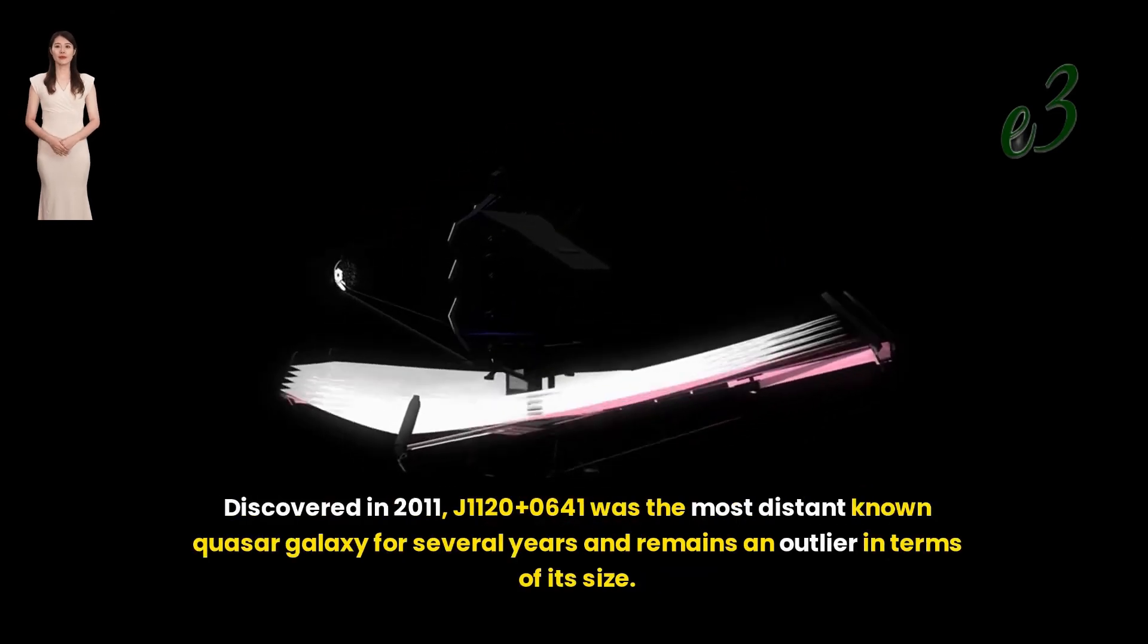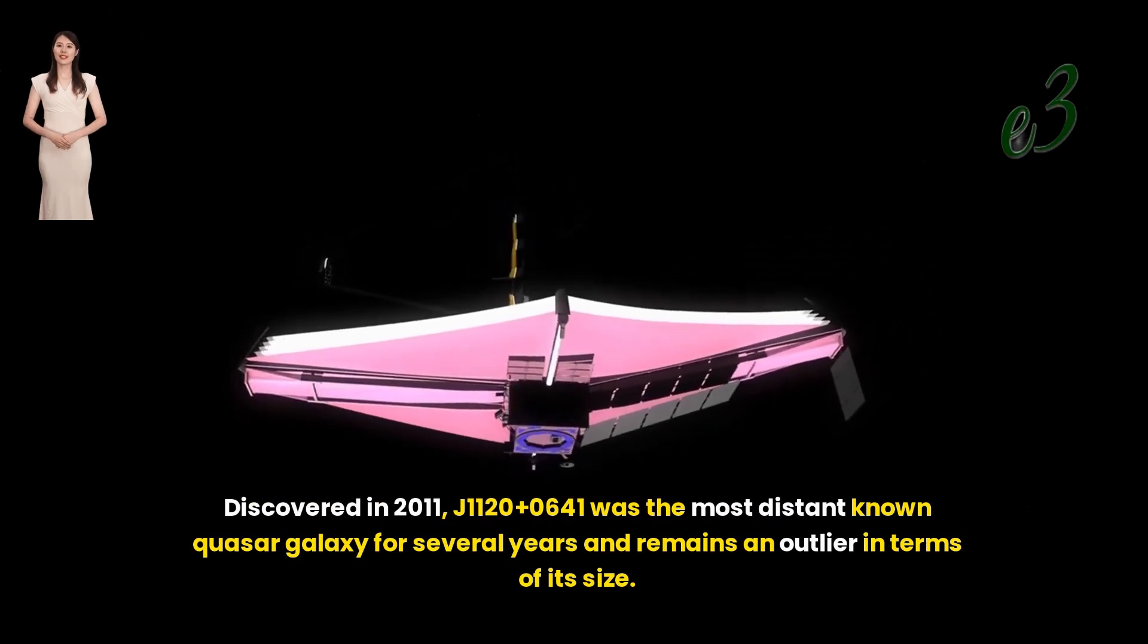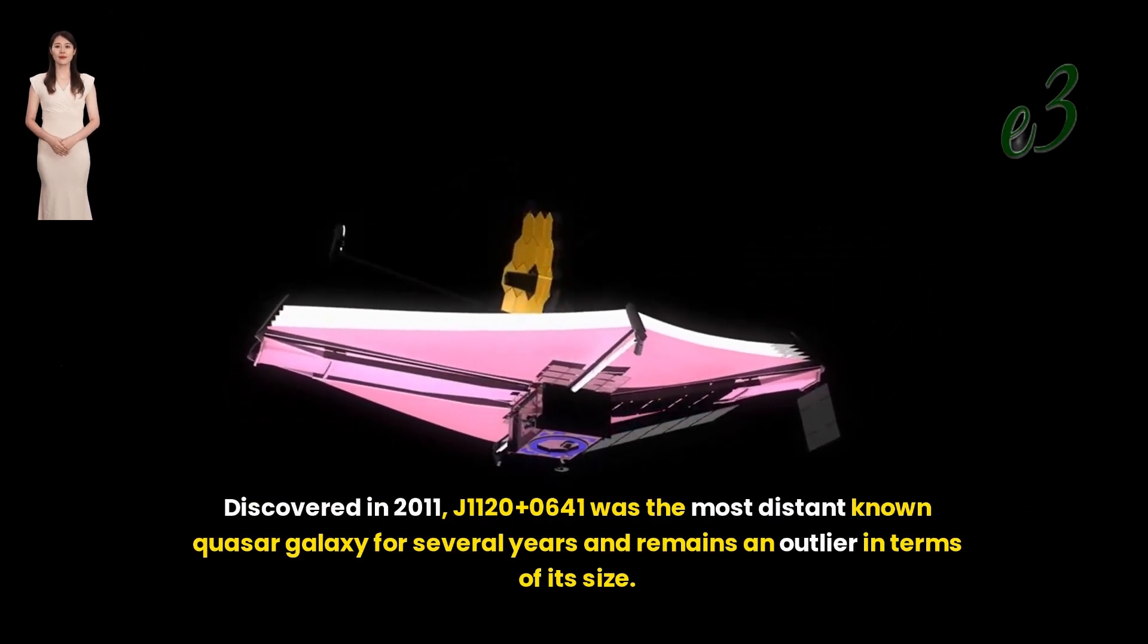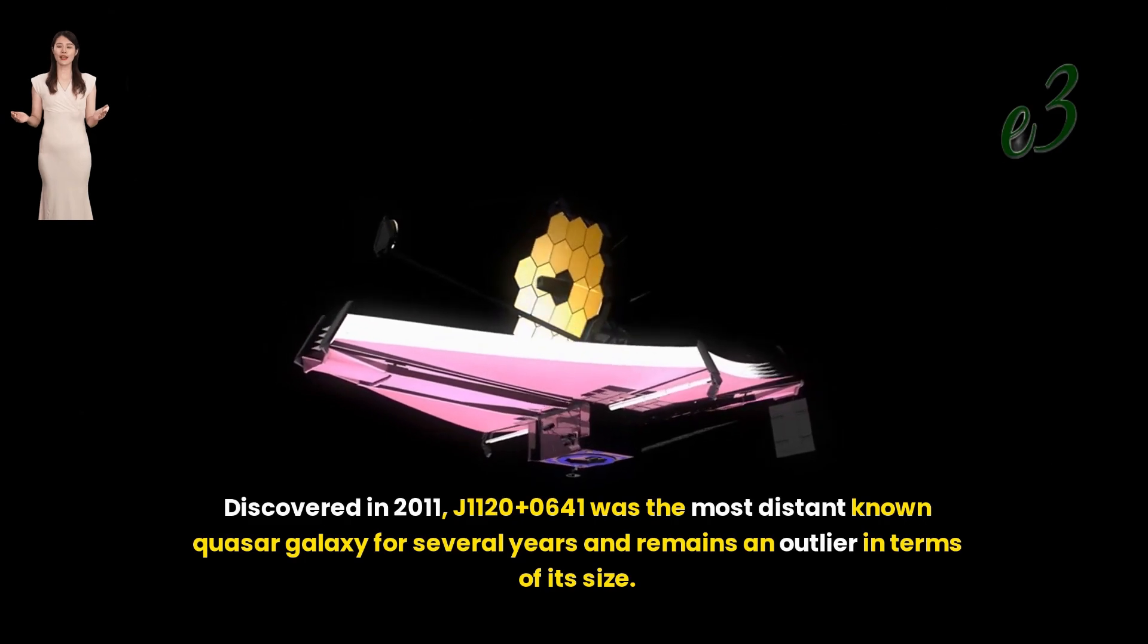Discovered in 2011, J1120+0641 was the most distant known quasar galaxy for several years and remains an outlier in terms of its size.